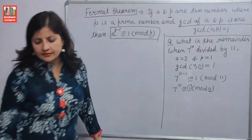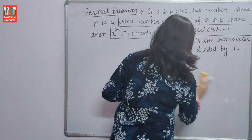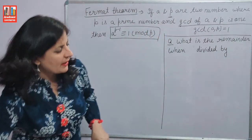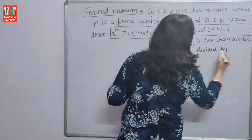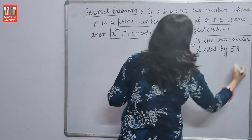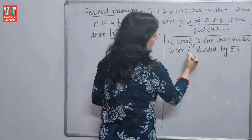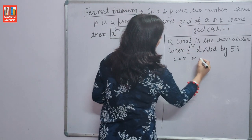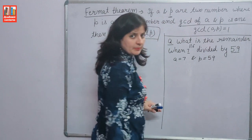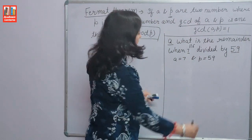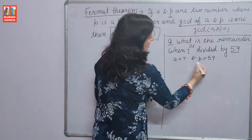Let's take one more example. What is the remainder when 7 raised to the power 116 is divided by 59? Here, value of A is 7 and value of P is 59. P is a prime number, then we can use Fermat's theorem, and we know that GCD of A and P — 7 and 59 — is 1.